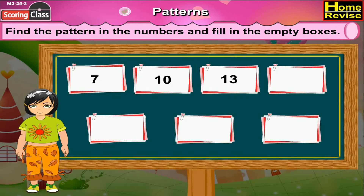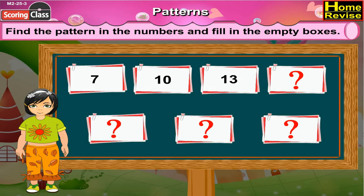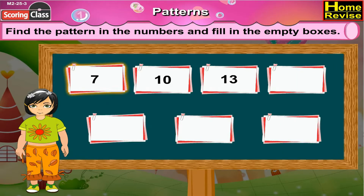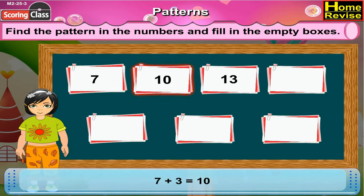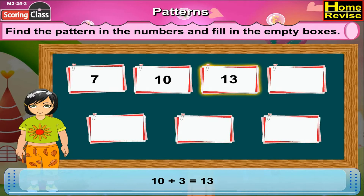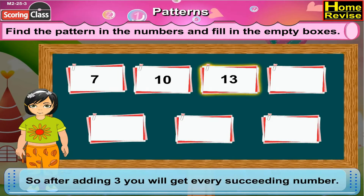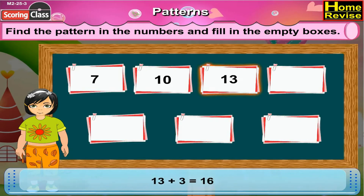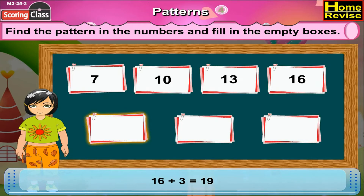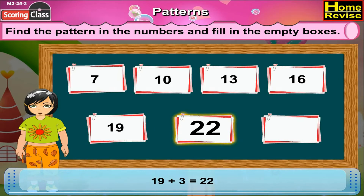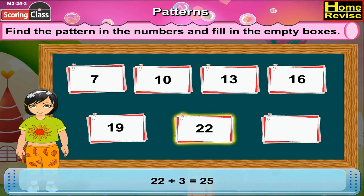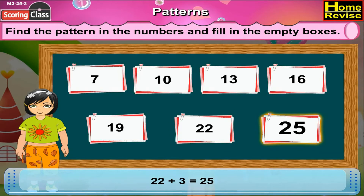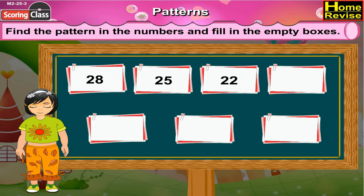The next number strip. It is 7, 10, 13 and 4 empty boxes. Now if you notice, the first number is 7. If you add 3 to it, you get your second number 10. If you add 3 to it, you get your third number 13. So after adding 3, you will get every succeeding number. So 13 plus 3 is 16. Then 16 plus 3 is 19. Then 19 plus 3 is 22. And 22 plus 3 is 25.